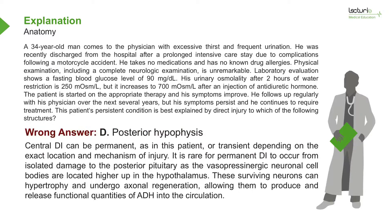D, posterior hypophysis, is close but not quite. Central DI can be permanent, as in this patient, or transient depending on the exact location and mechanism of injury. It is rare for permanent DI to occur from isolated damage to the posterior pituitary, as the vasopressinergic neuronal cell bodies are located higher up in the hypothalamus. These surviving neurons can hypertrophy and undergo axonal regeneration, allowing them to produce and release functional quantities of ADH into the circulation.